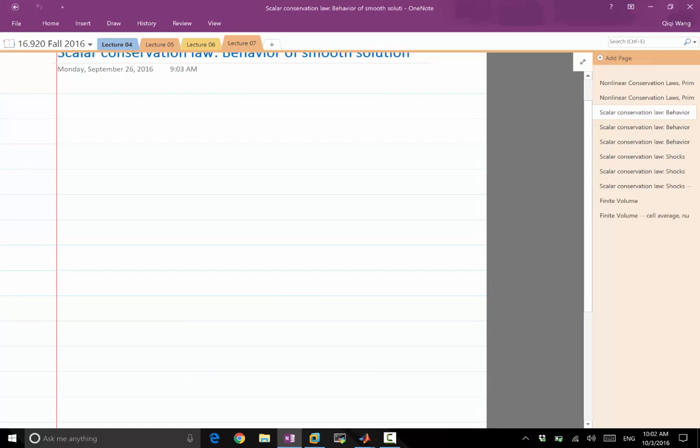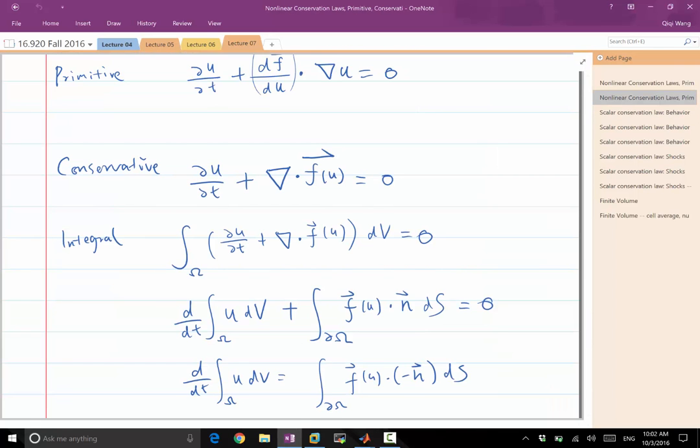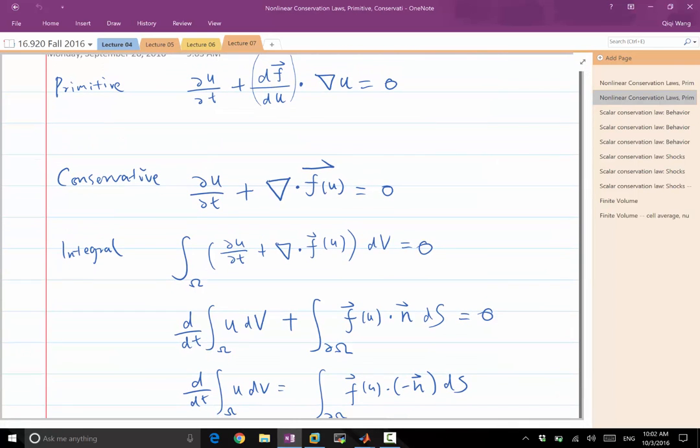Question? Are the primitive and conservative equations saying something different? Can you, or is it mathematically equivalent but different stuff, right?